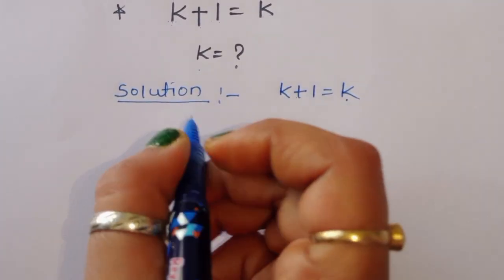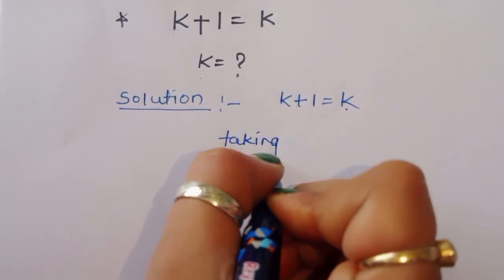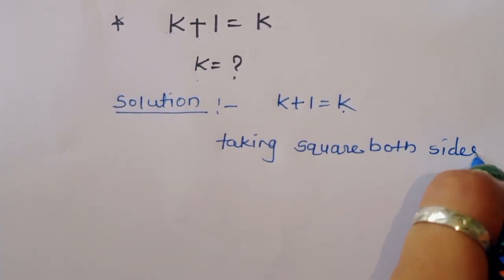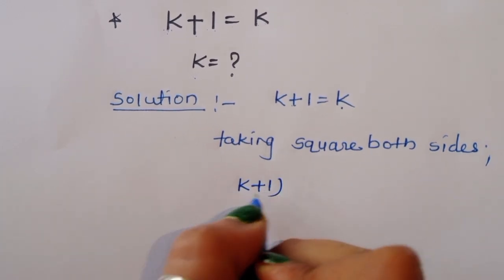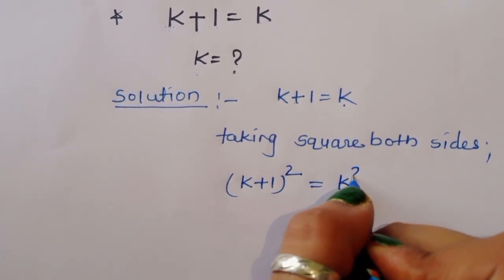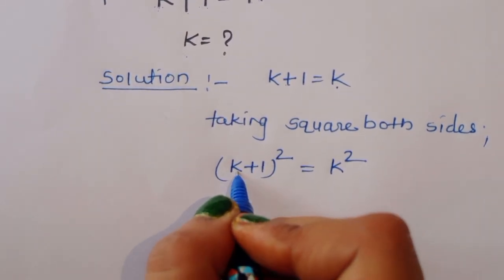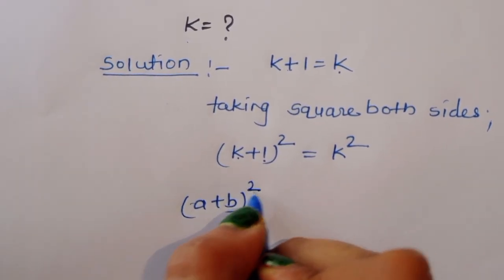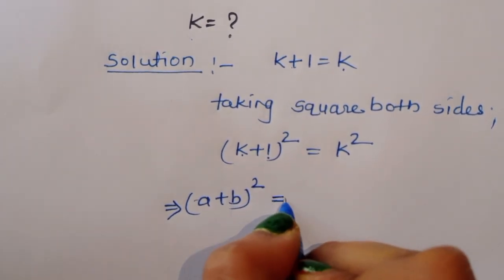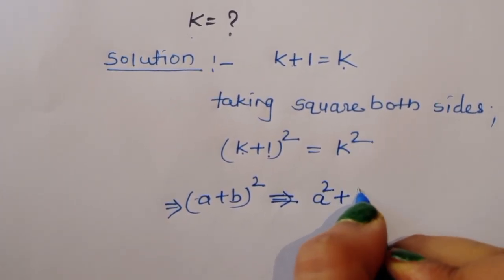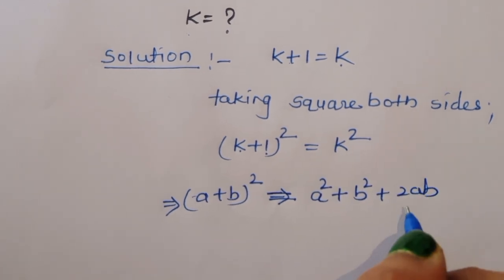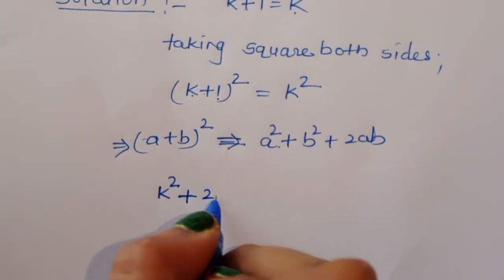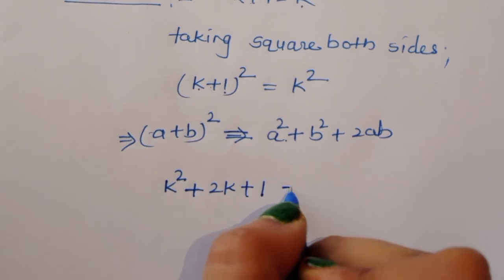We can take square of both sides. Taking square of both sides, we will get k plus 1 whole square is equal to k square. Now k plus 1 whole square uses the formula (a+b)² = a² + 2ab + b². Using this formula, k plus 1 whole square expands to k² + 2k + 1 is equal to k².